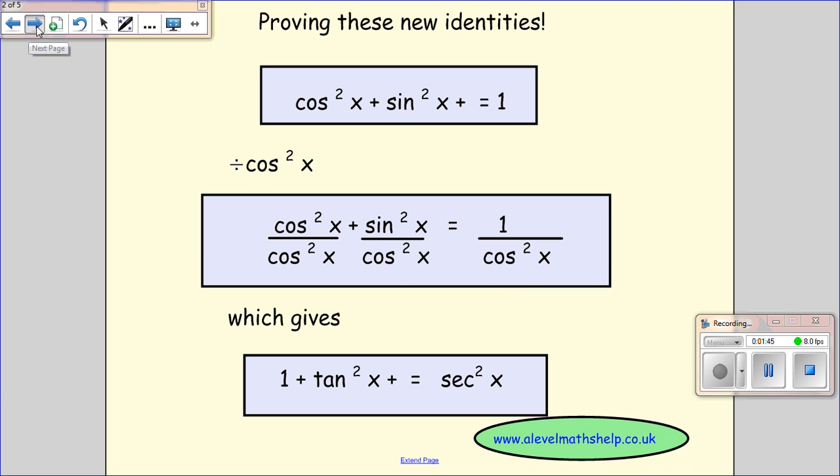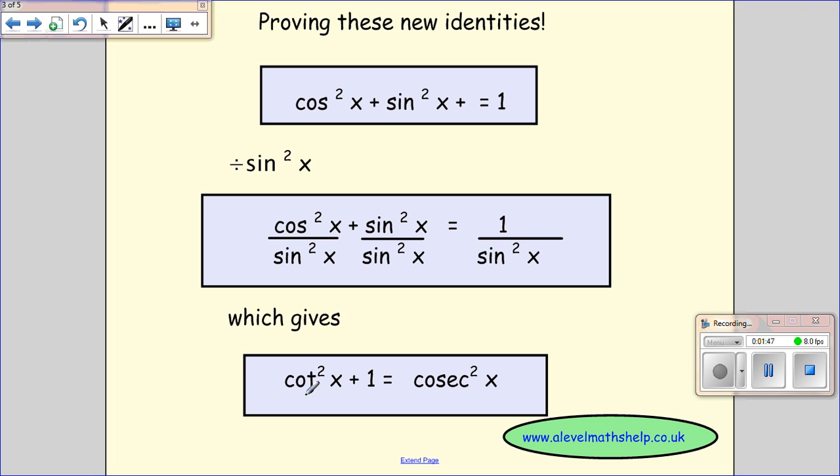Okay, and then we've got to get what we want. The second one, cot squared x plus 1 equals cosec squared x. Again, we start with the same thing. Cos squared x plus sin squared x equals 1. We divide by sin squared x, making sure we do each term by sin squared x.